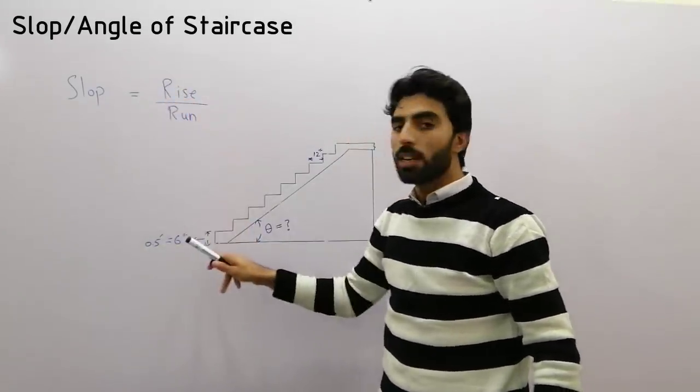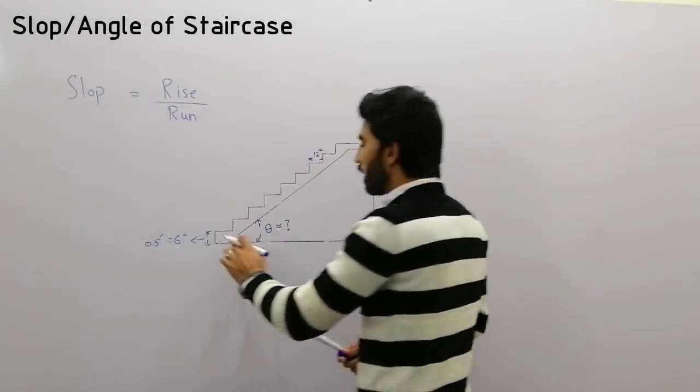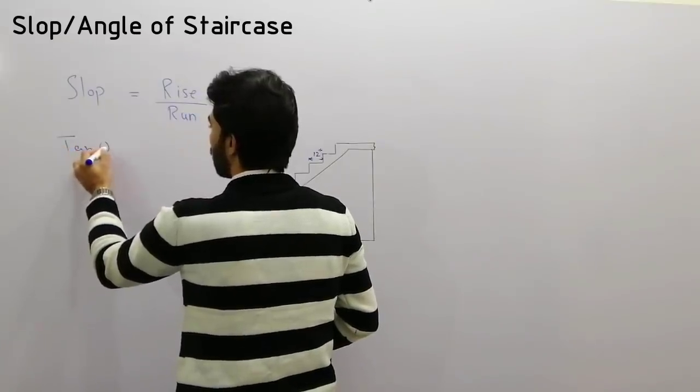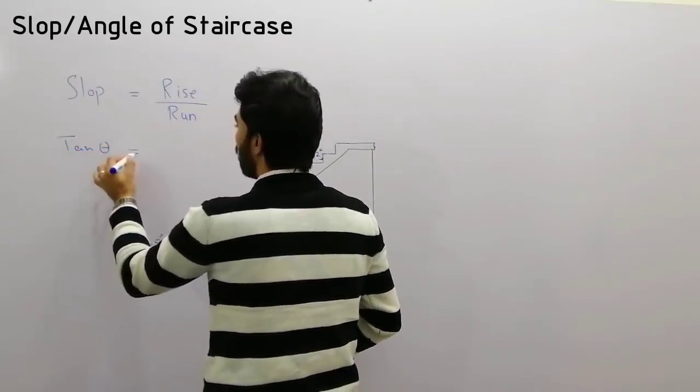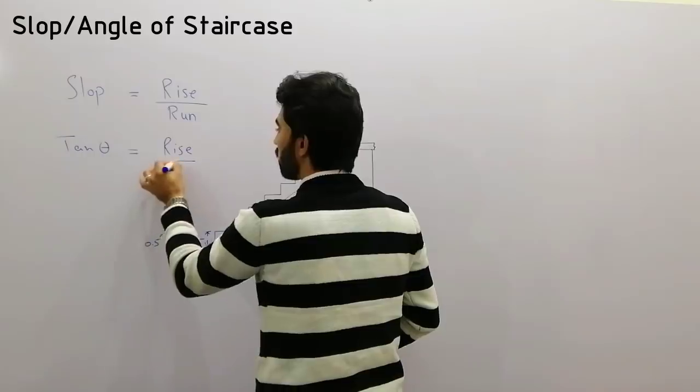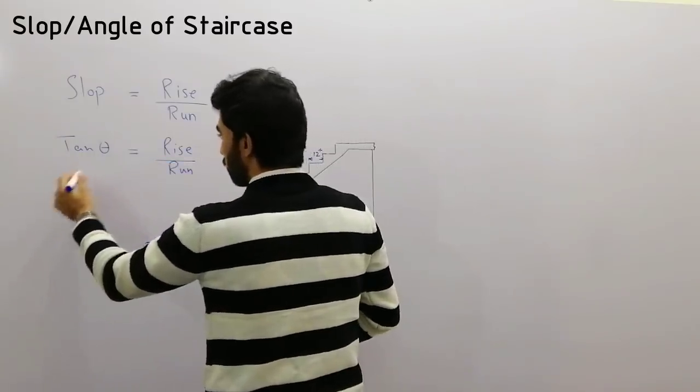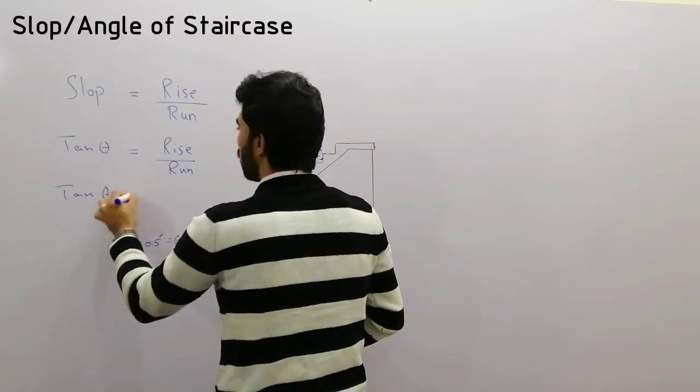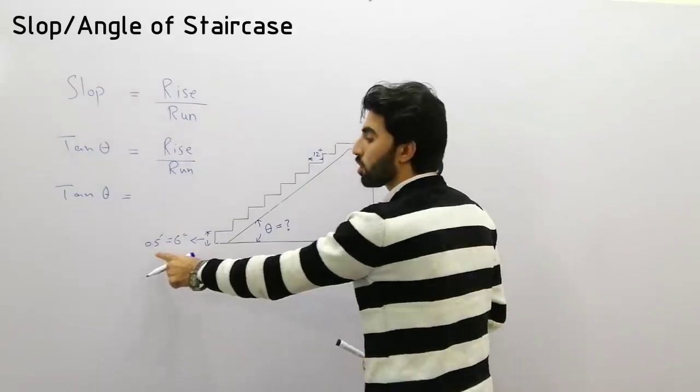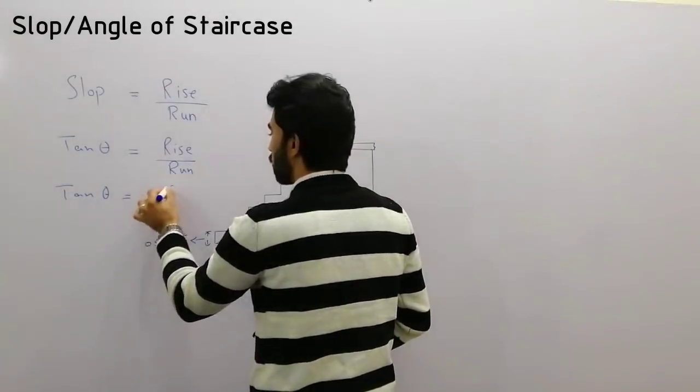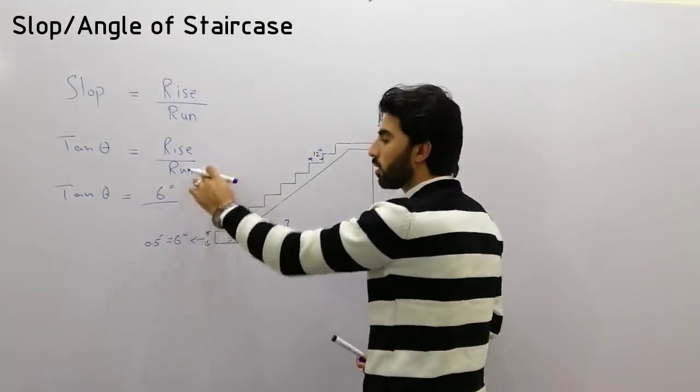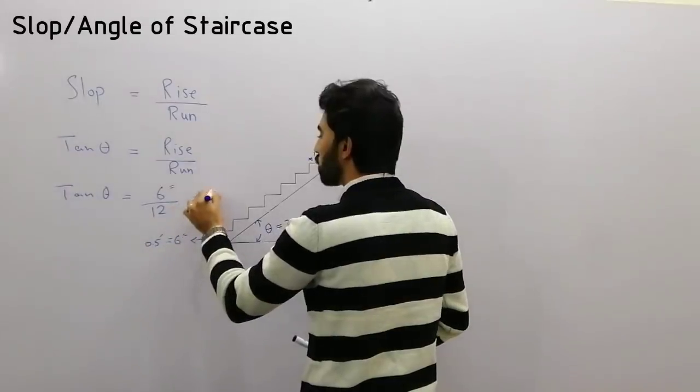We use the tangent formula: tangent theta equals rise divided by run. The rise here is 6 inches, which is 0.5 feet. So 6 inches divided by 12 inches equals 0.5.